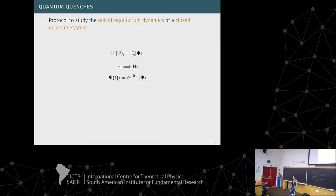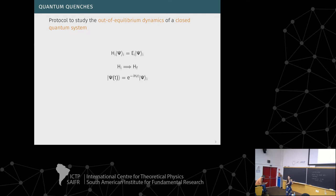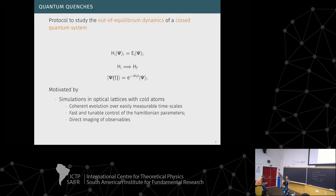A quantum quench is a protocol to study the out-of-equilibrium dynamics of a closed system. We start from a given state that can be the ground state of a given Hamiltonian, then we change the Hamiltonian — that is, we change the system parameters — and let the state evolve with this new Hamiltonian. Since the system is isolated from the environment, the evolution is unitary, but it's not trivial because the initial state is not an eigenstate of the final Hamiltonian. This kind of study has attracted more attention over something like two decades, mainly due to the simulation of model Hamiltonians in optical lattices with cold atoms.